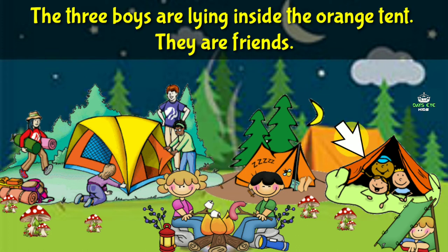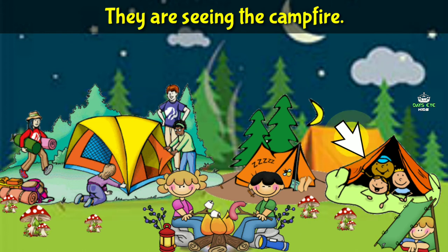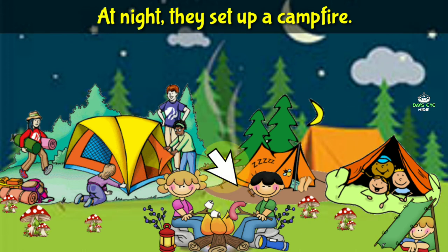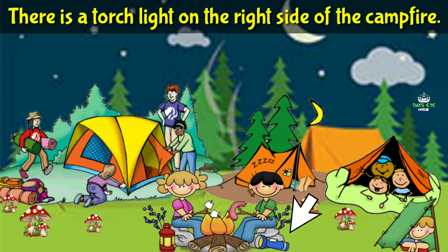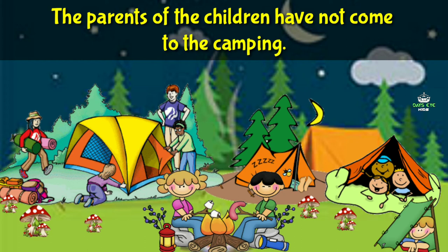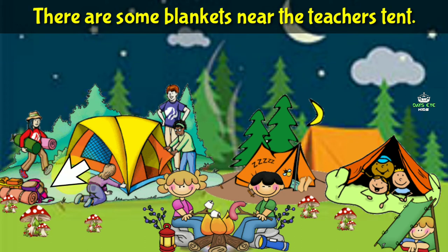Two kids are sitting around a campfire and making dinner. The three boys are lying inside the orange tent. They are friends. They are watching the campfire at night. They set up a campfire. There is a lamp on the left side of the campfire. There is a torchlight on the right side of the campfire.